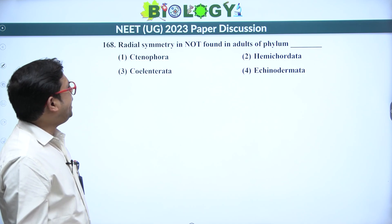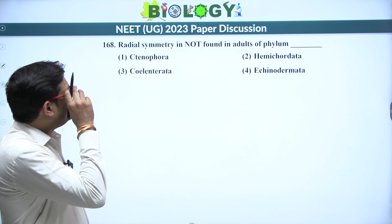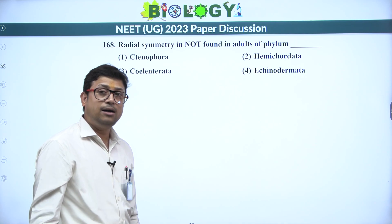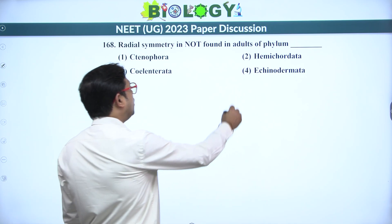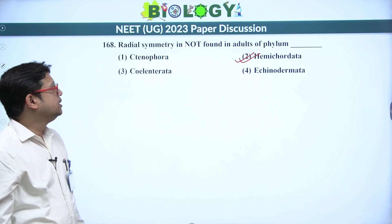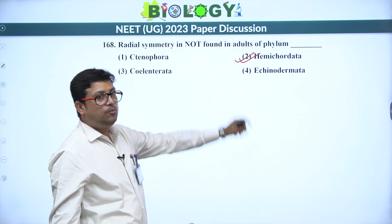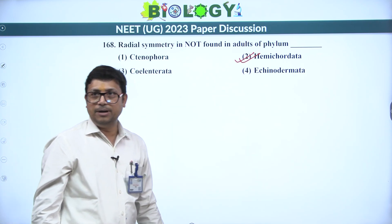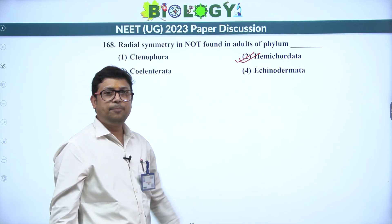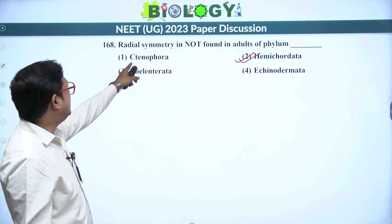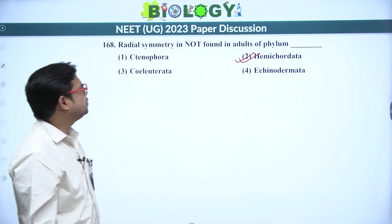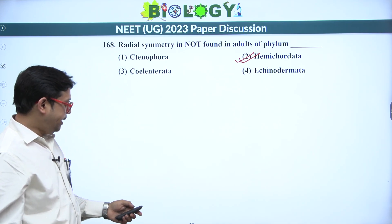Next: radial symmetry is not found in the adult of which phylum? Not larval stage — adult. Echinodermata have pentaradial symmetry in adults (larvae have bilateral symmetry). Coelenterata and Ctenophora also have radial symmetry. So the answer is Hemichordata — organisms like Balanoglossus (tongue worm) do not have radial symmetry.